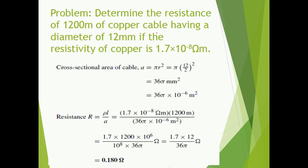Let us talk about another numerical. Determine the resistance of 1200 meters of copper cable having a diameter of 12 mm, if the resistivity of copper is given as 1.7 × 10⁻⁸ ohm meter.